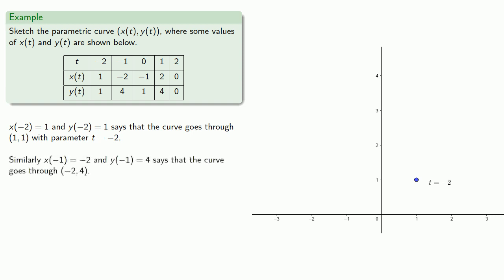Similarly, x(-1) = -2 and y(-1) = 4, so the curve goes through the point (-2, 4) with parameter value -1. And we'll plot the remaining points.